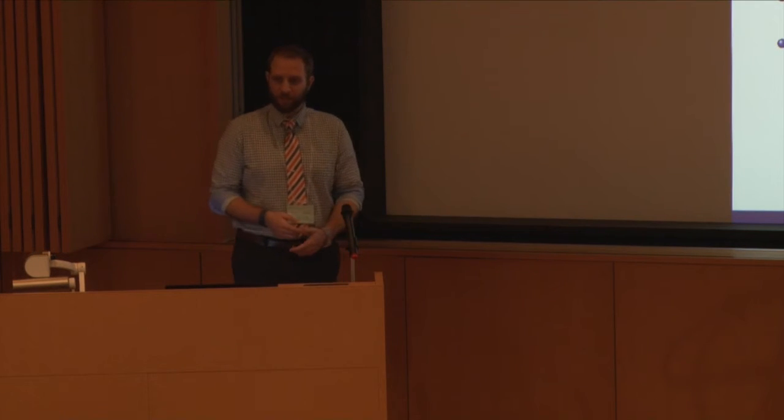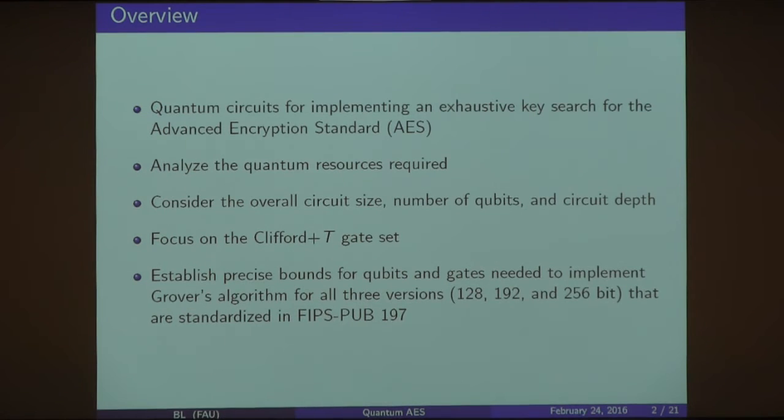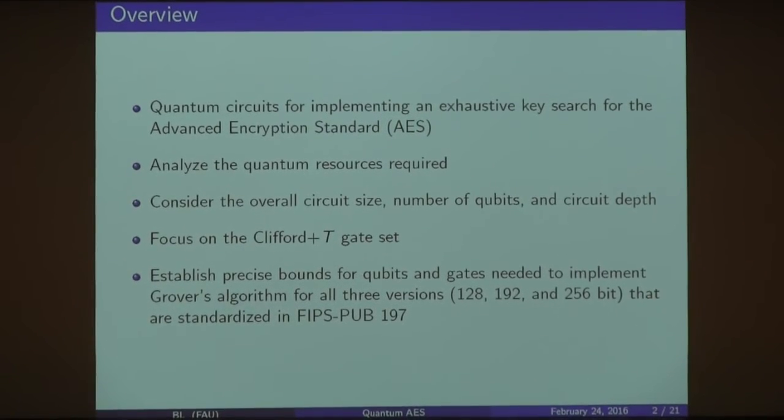All right. Thank you. To our knowledge, there was no quantum circuit for AES actually implemented out there. That's mostly what we did - create an AES circuit that now can be applied to Grover and calculate all the resource estimates for that. We analyzed the quantum resources including the overall circuit size, the number of qubits, and the circuit depth using the Clifford plus T gate set. We did this for all three versions of AES that are standardized in the FIPS pub 197.